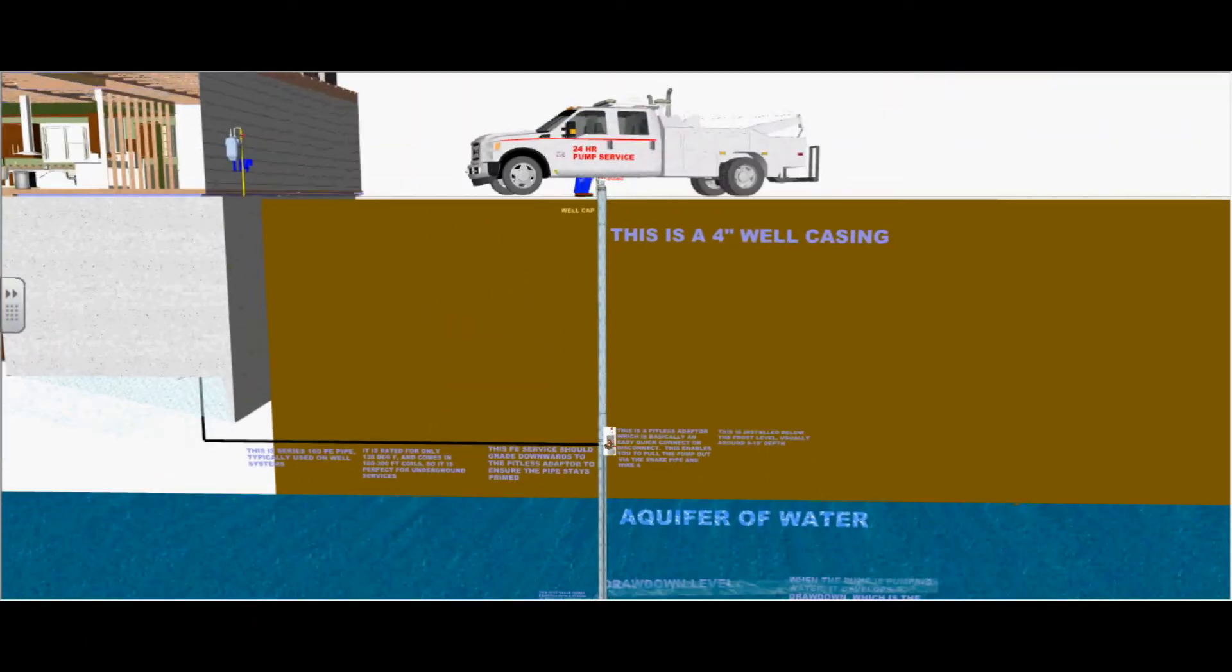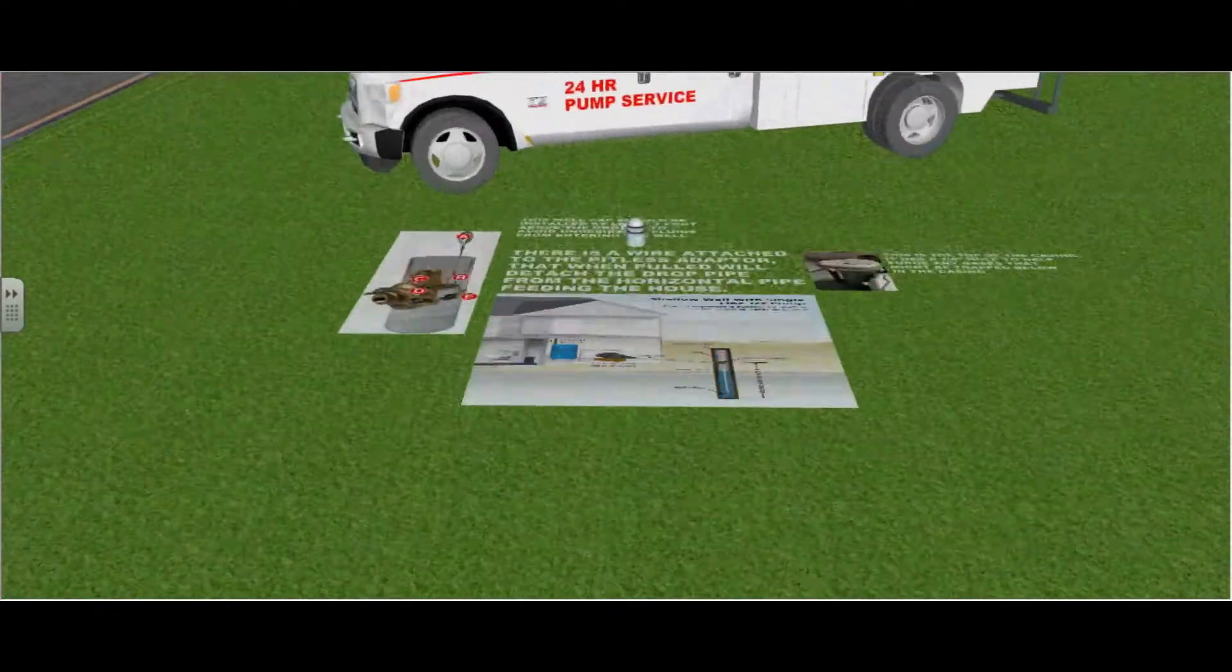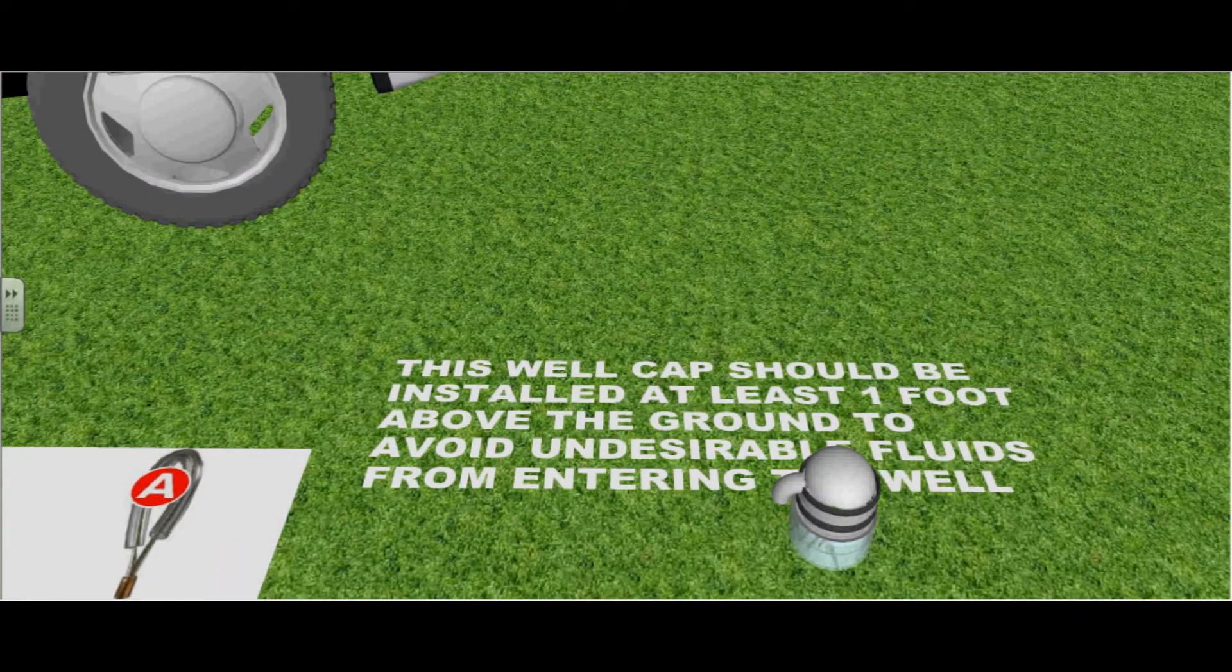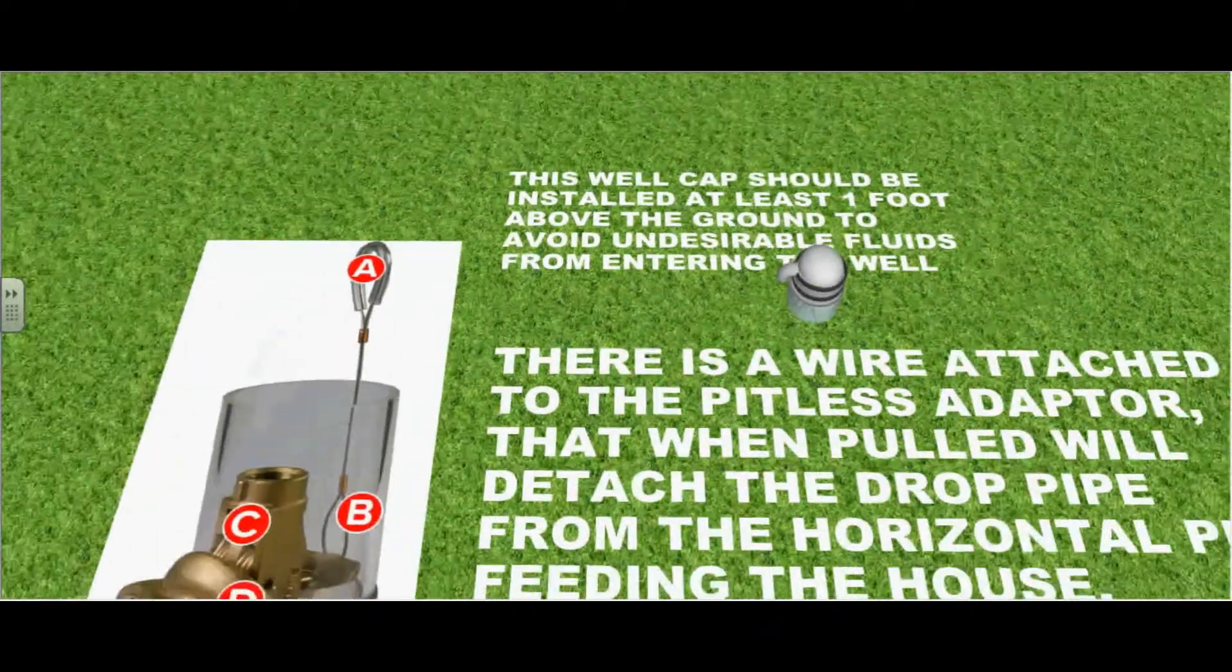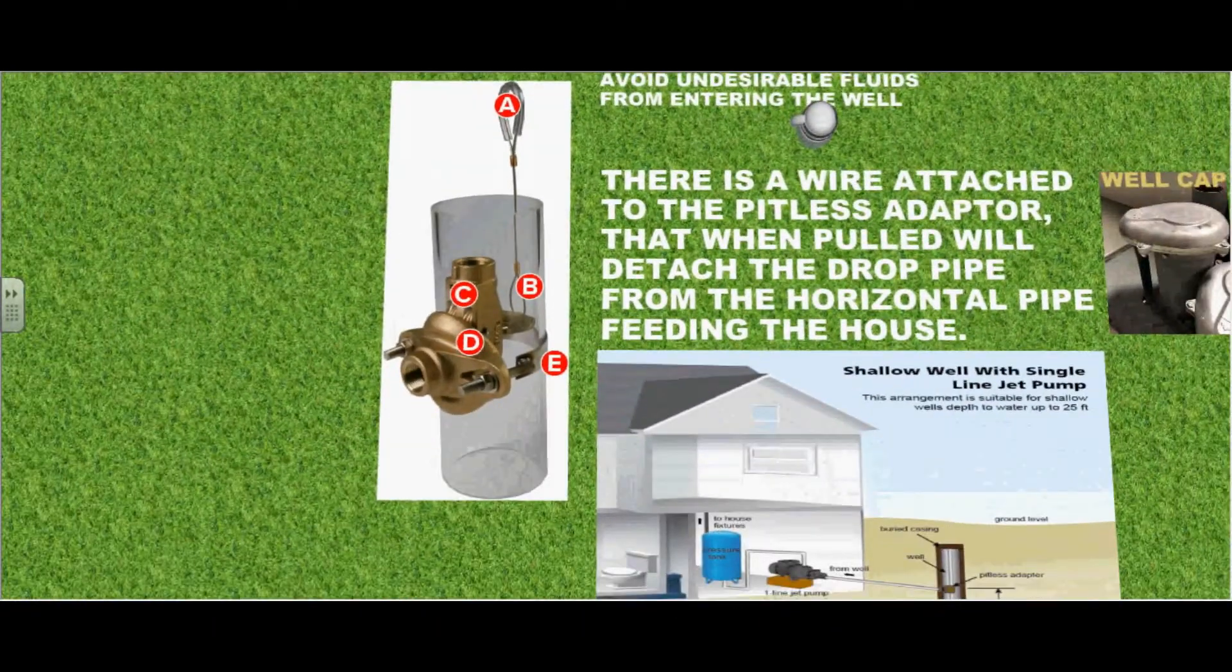This is a 4 inch well casing. This well cap should be installed at least 1 foot above the ground to avoid undesirable fluids from entering the well.